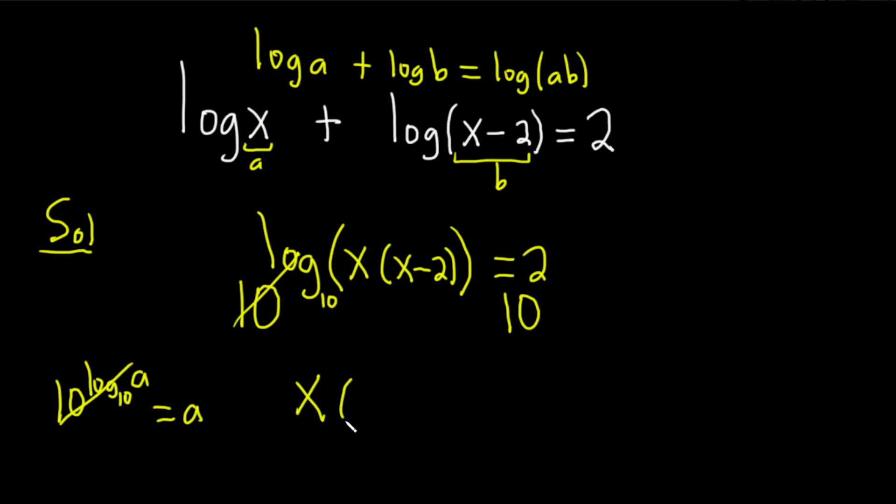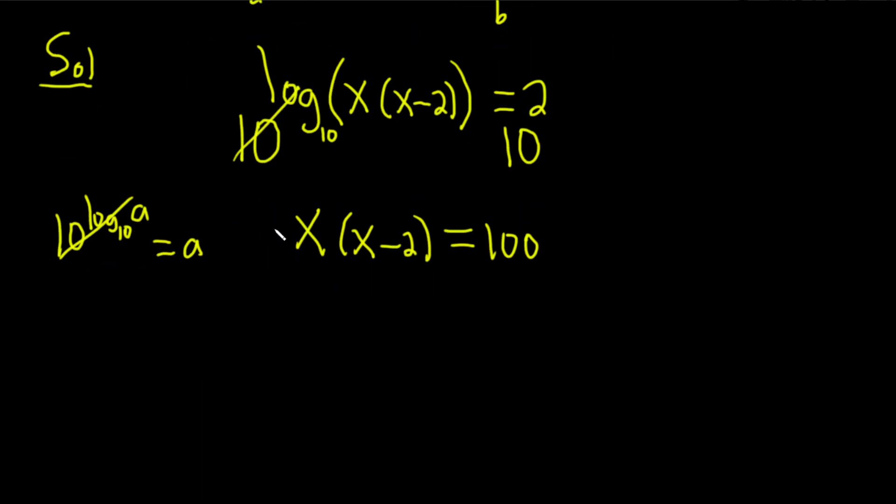So here we have x times (x minus 2), and this is equal to, well, 10 squared is 100. And now we can distribute the x. So we get x times x, which is x squared, minus x times 2 is 2x. And this is equal to 100. Then we can subtract 100 from both sides. So we're going to get x squared minus 2x minus 100, and this is equal to 0.